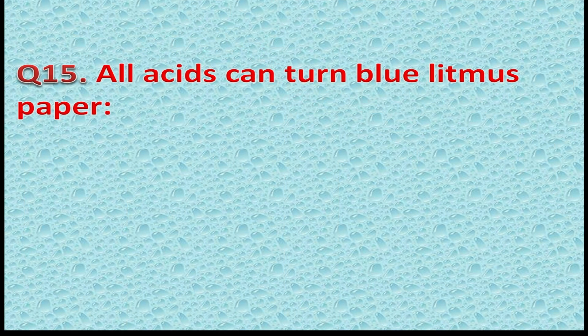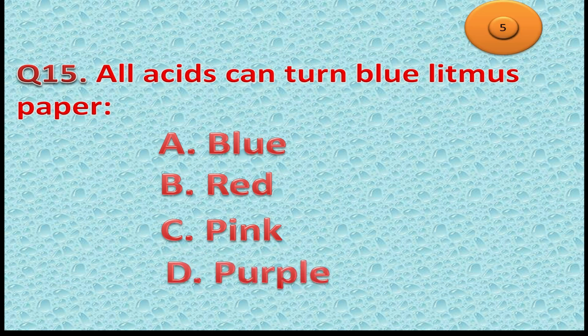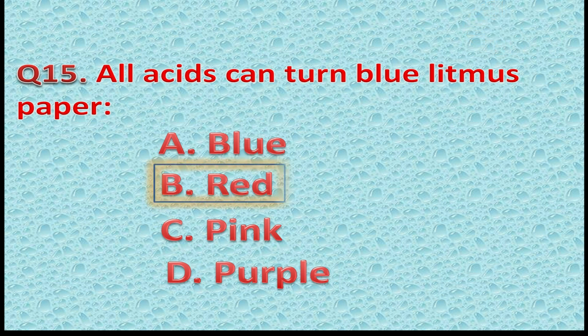Question 15: All acids can turn blue litmus paper — Option A: Blue. Option B: Red. Option C: Pink. Option D: Purple. This one was very easy. The correct answer is Option B — Red. You got one point if you gave this answer.